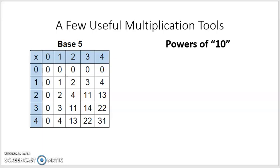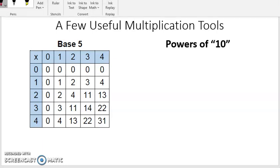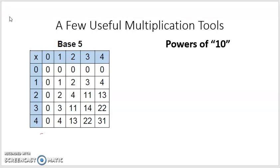So the times table — for example in base 5, I look at 3 times 3. 3 times 3 would be 9, but 9 in base 5 is going to be 1 five and 4 ones, and that's why 3 times 3 in base 5 is 14.